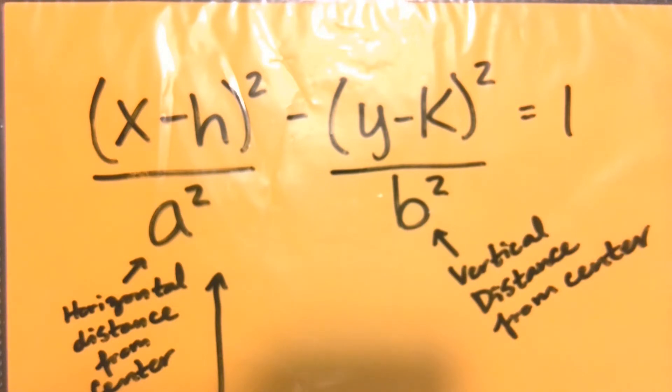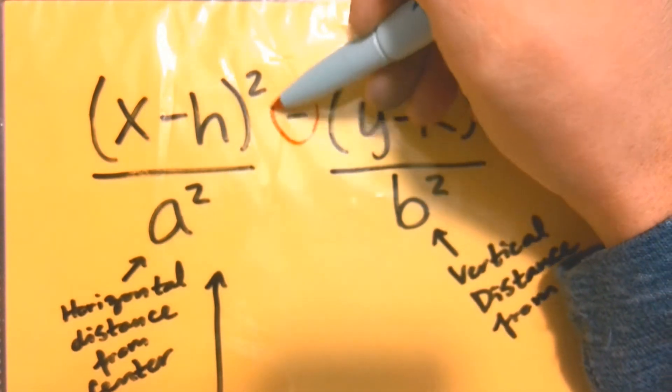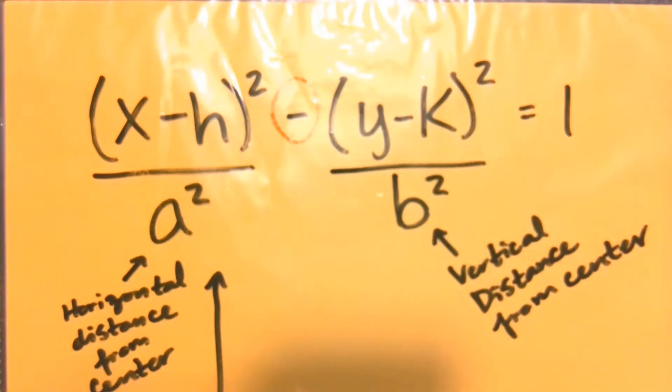The last conic section that we're going to talk about is the hyperbola, and you might notice that this general equation looks almost identical to the ellipse general equation. Can you spot the difference here? Hopefully you see it. That negative is the only difference between an ellipse equation and a hyperbola equation - that we're subtracting in between, but that's going to change quite a few things.